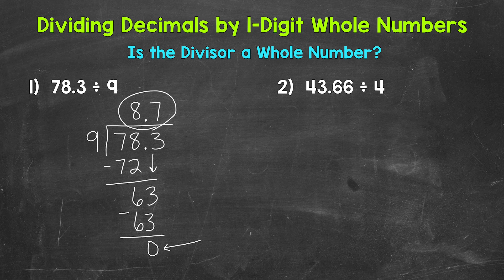Let's move on to number 2, where we have 43.66 divided by 4. We will start by setting this problem up. And I'm going to come to the side here because this one will need a little more room than number 1 did. So 43.66 is the dividend, the number we are dividing.